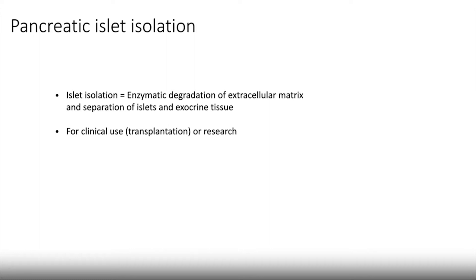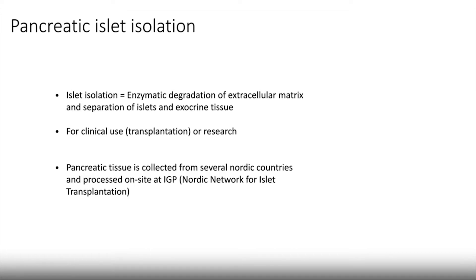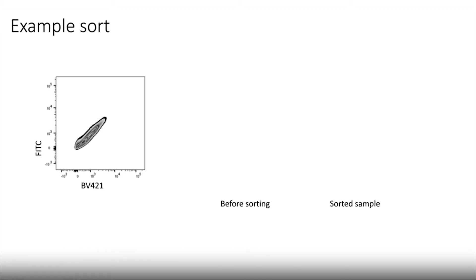Pancreata are routinely received and processed for use in transplantation or research at our facility at the Department of Immunology, Genetics and Pathology. If we are interested in the transcriptomes of the cells, we want to study the tissue as fast as possible, which often means starting our cell sorting at odd hours. This would make it very complicated to coordinate our cell sorting with a core facility.